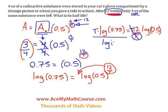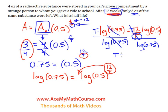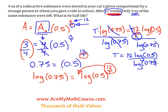Then I shall divide both sides of the equation by log 0.75. They cancel out over here, so I get T equals 12 log(1/2) over log(3/4).